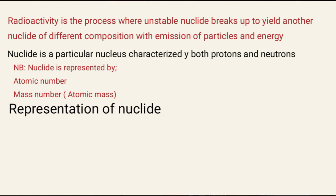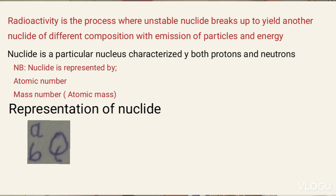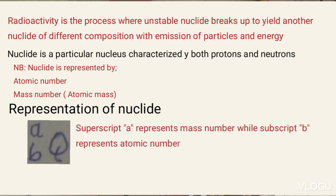This is how a nuclide is represented. The superscript, which is A, represents the mass number, while the subscript, B, represents the atomic number.